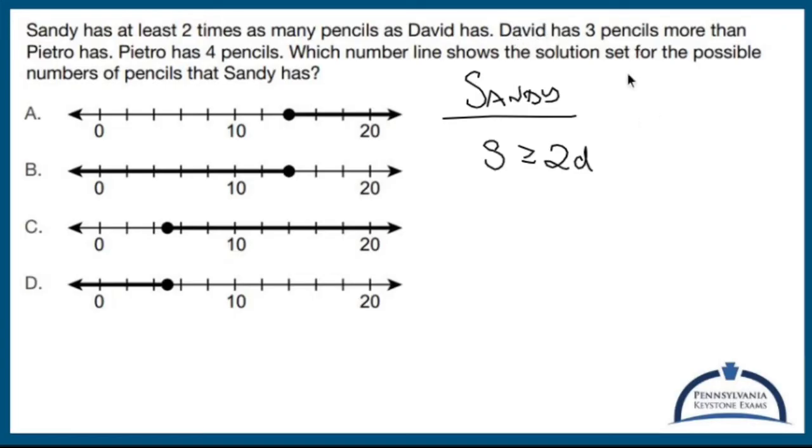David has three. So, okay, David has three pencils more than Pietro. So D is three pencils more than Pietro.